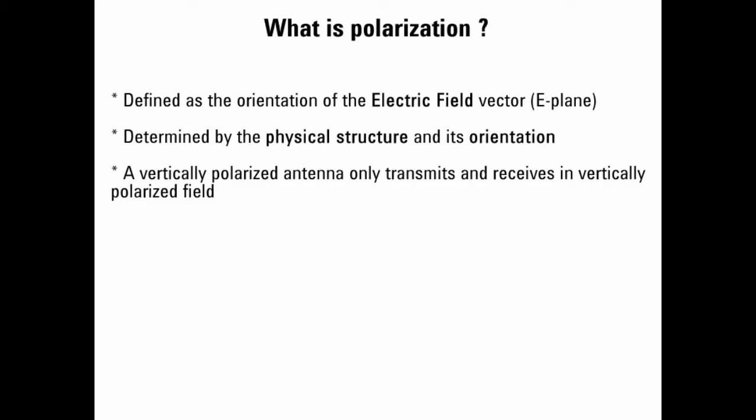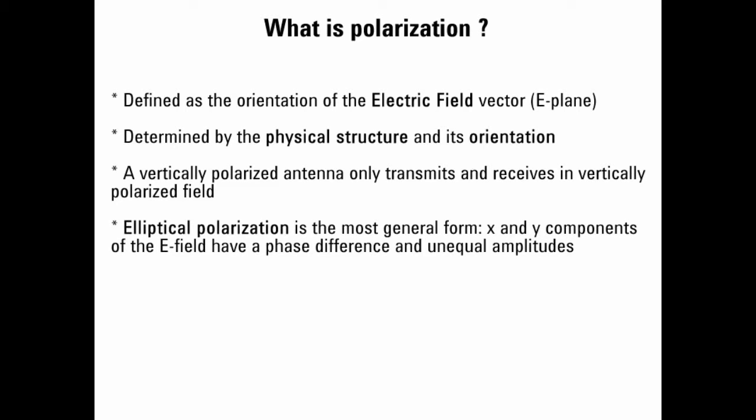In general, a vertically polarized antenna only transmits and receives in vertically polarized fields. If a vertically polarized antenna is trying to communicate with a horizontally polarized antenna, there will be no reception. Polarization is the sum of the X and Y components of the E field over time, perpendicular to the direction of travel. In most cases, polarization is elliptical, meaning the polarization of the electromagnetic wave varies over time.